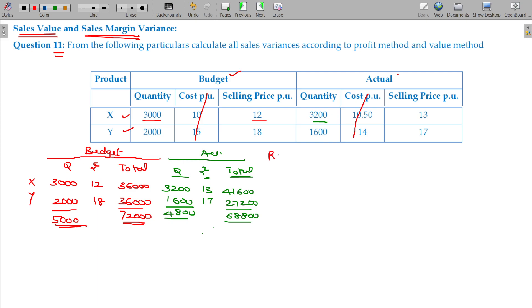The revised standard quantity needs to be calculated. RSQ is 4800 with budgeted mix in 3 to 2 ratio. So 4800 in 3 to 2 ratio gives us 2880 and 1920.